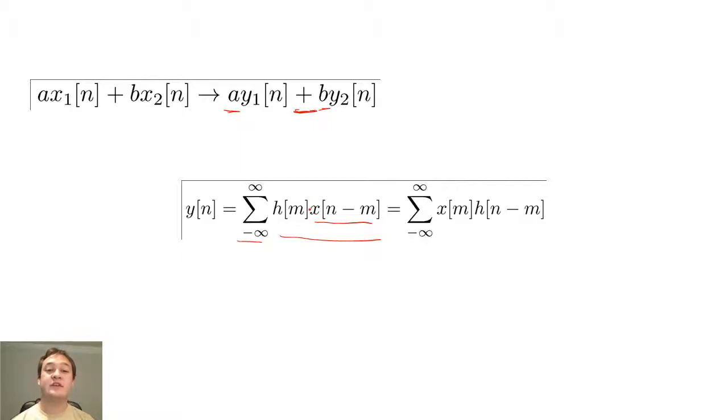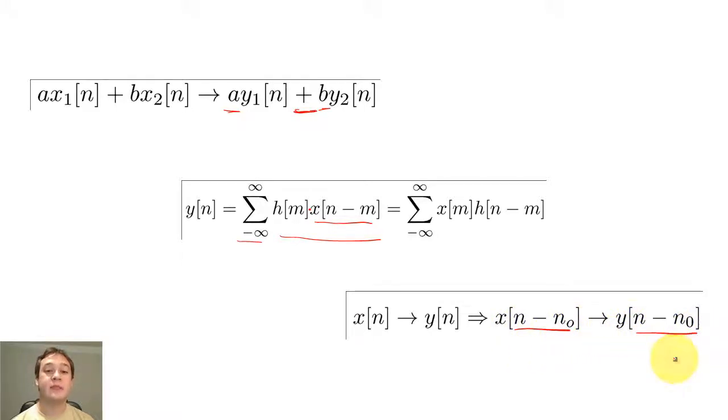The shift invariance property tells us that a shift in the input causes a corresponding shift in the output. If a system was not shift invariant, the shifting of the input in the convolution sum would cause erratic shifts in the output, and the convolution sum would not work.